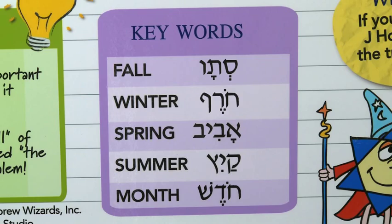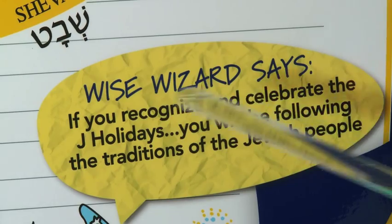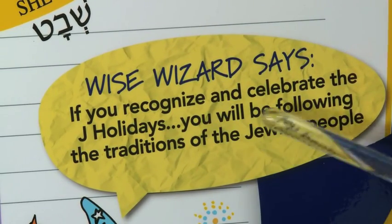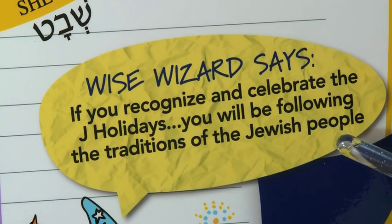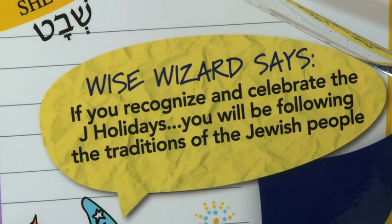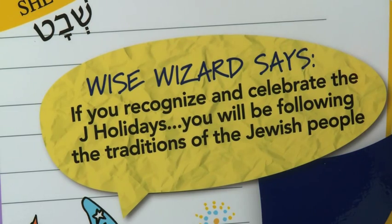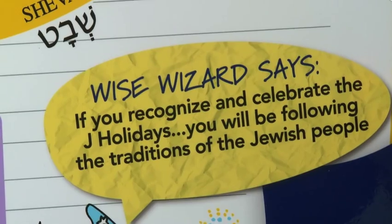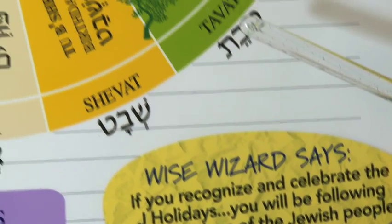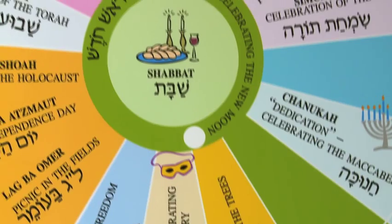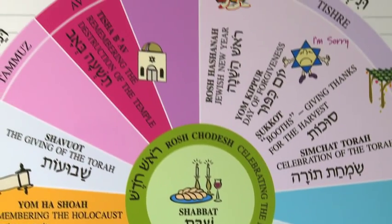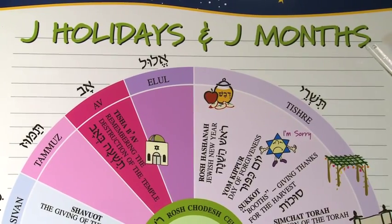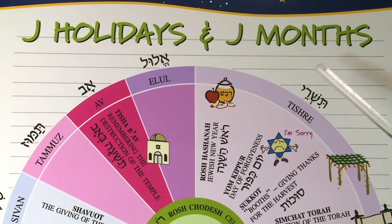The Wise Wizard says: if you recognize and celebrate the J Holidays, you will be following the traditions of the Jewish people. And that's what we'd like to do — put ourselves in somebody else's shoes and figure out what we can be appreciative and grateful for. We're always worrying about the next generation of Jews, our children. So this is the J Holidays and J Months. I hope it was helpful. We'll see you next time on Solomon Says.